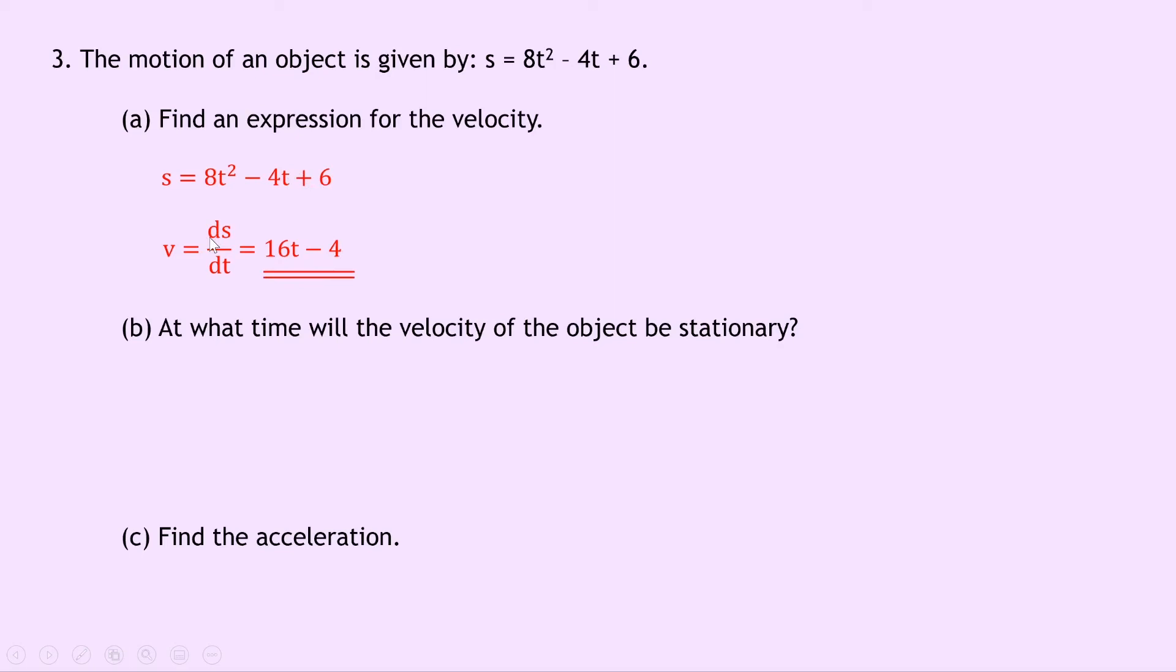Part b says at what time will the velocity of the object be stationary? Well we've just worked out an expression for velocity in part a so we can use that and we can put in when v equals 0 to work out what the time is. So if we do that we've got that the object is stationary when v equals 0, its velocity is 0. So we have 0 equals 16t minus 4 and adding 4 to both sides we get 16t equals 4. Dividing both sides by 16 now we get t equals 4 over 16 which is 0.25 seconds.